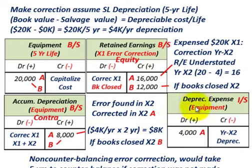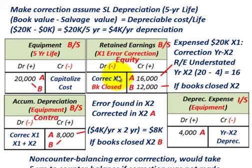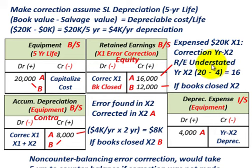The next correcting entry is to recognize depreciation expense on the income statement for the current year, X2, of $4,000. We also need to correct retained earnings. Retained earnings was understated by $20,000 from the full purchase price expensed in X1, but we offset that by the $4,000 depreciation we would have recognized in X1. So retained earnings was understated by only $16,000 — that's $20,000 less $4,000.